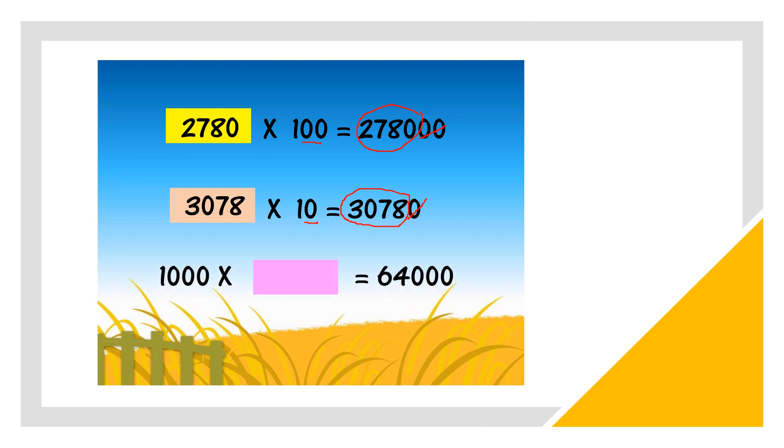Next one. 1,000 times what equal to 64,000. Now look at 1,000. 1,000 we have 1, 2, 3 zeros. So there are 3 sifar. So now we have to cut 3 zeros. So left 64. So the answer is 64.